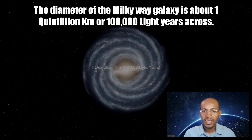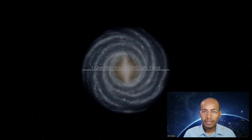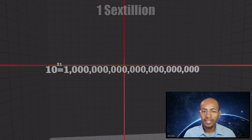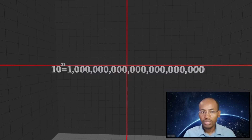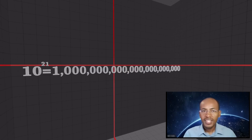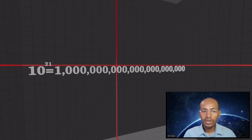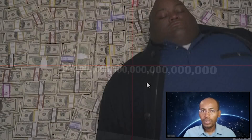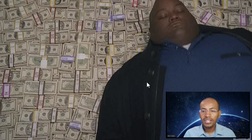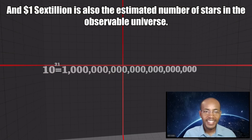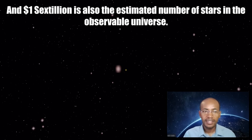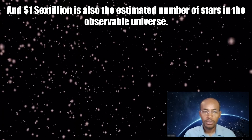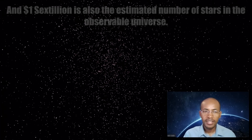Next up, let's go to a sextillion, which is 10 to the 21st power, or 1 plus 21 zeros. 1 sextillion is about giving around $130 billion to every single person on planet Earth, and 1 sextillion is also the estimated number of stars in the observable universe.